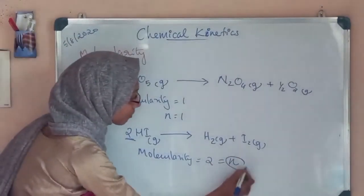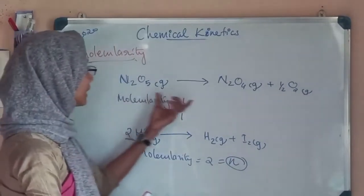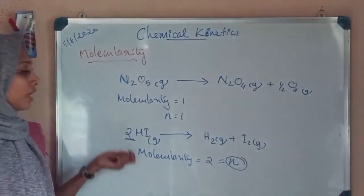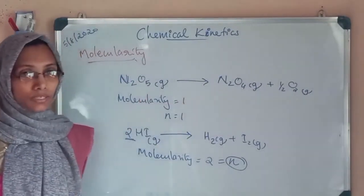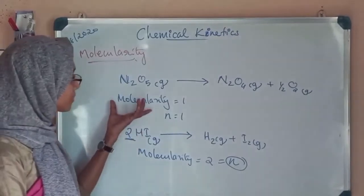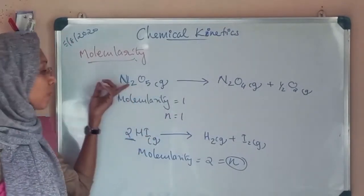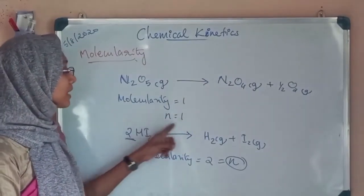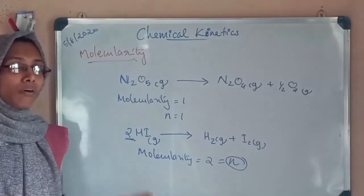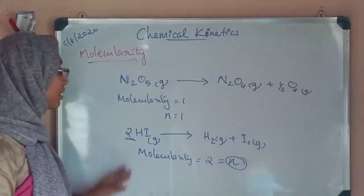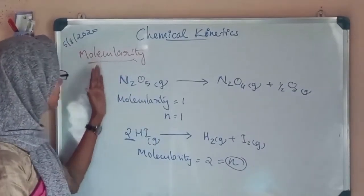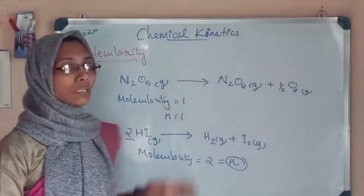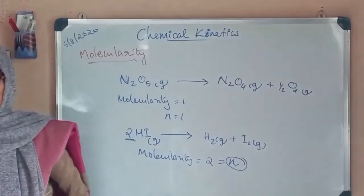In some simple reactions, the order is equal to the molecularity. The molecularity is purely a theoretical quantity — it is obtained from the balanced equation. But order is an experimental quantity; it is obtained only after conducting some experiment. However, in some simple reactions like these, the molecularity is equal to the order of the reaction.